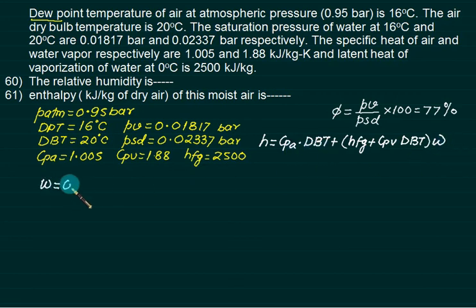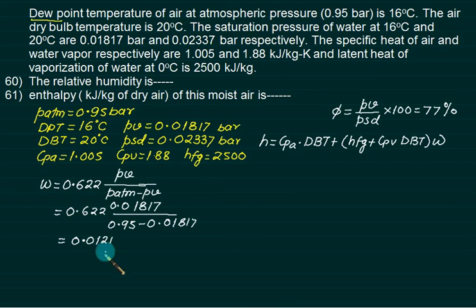What is specific humidity? W is 0.622 times PV upon P atmospheric minus PV. P atmospheric is this, PV is this. This answer is 0.0121.